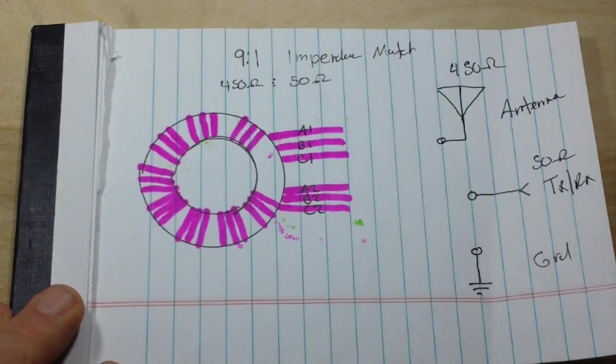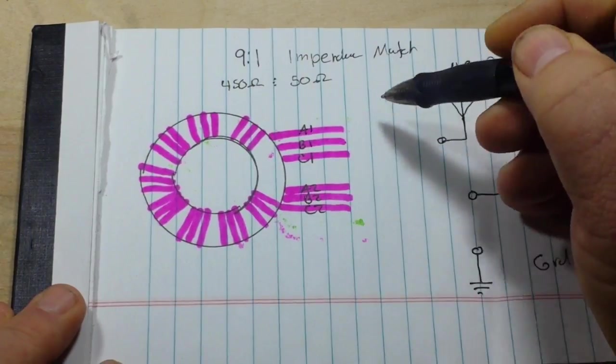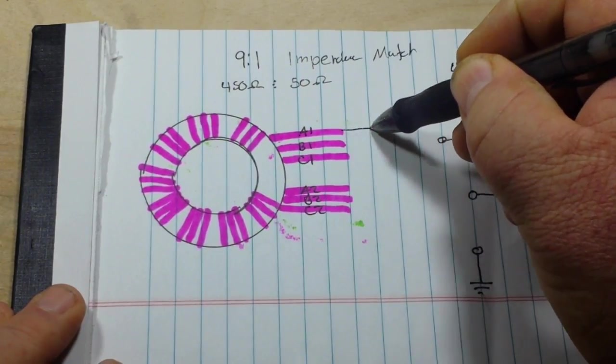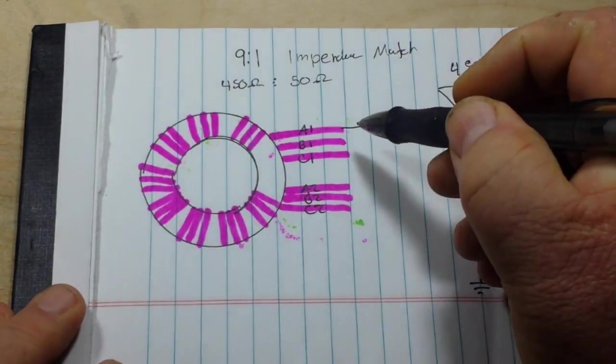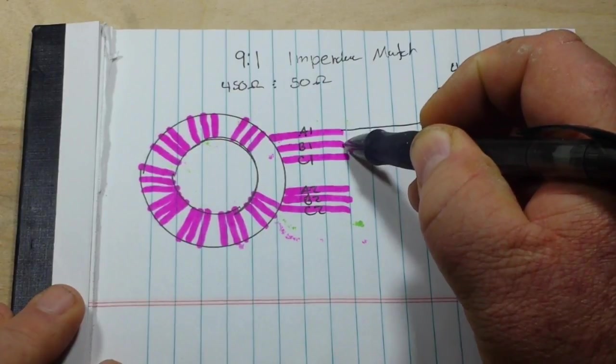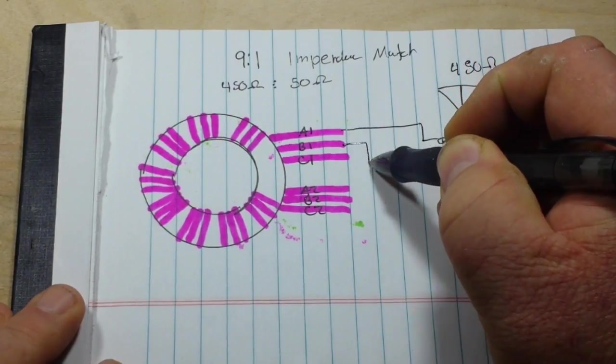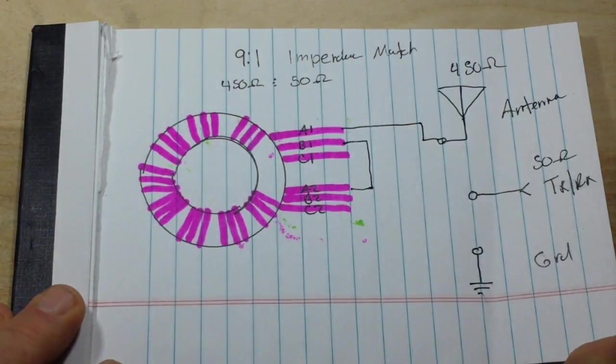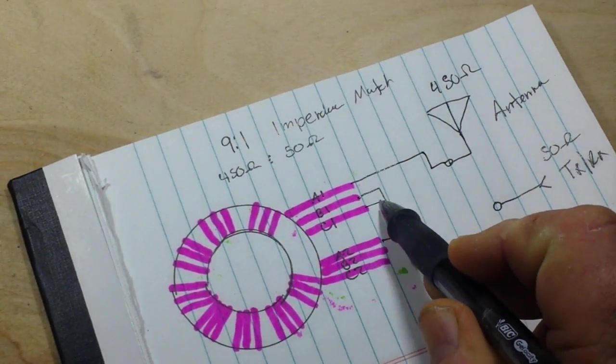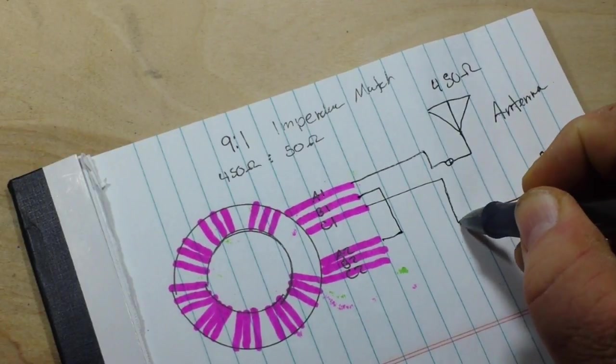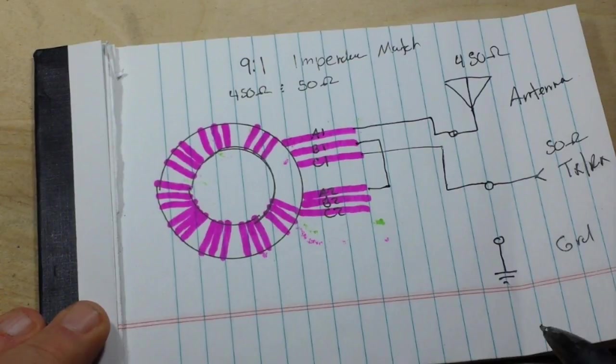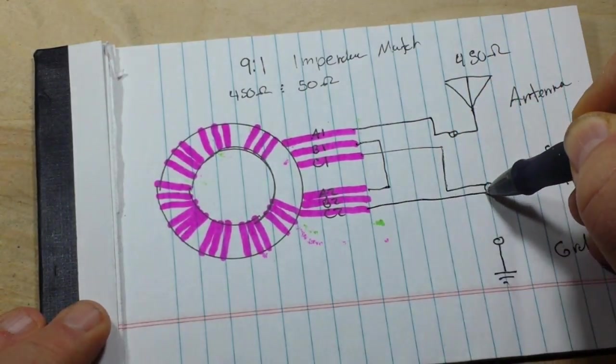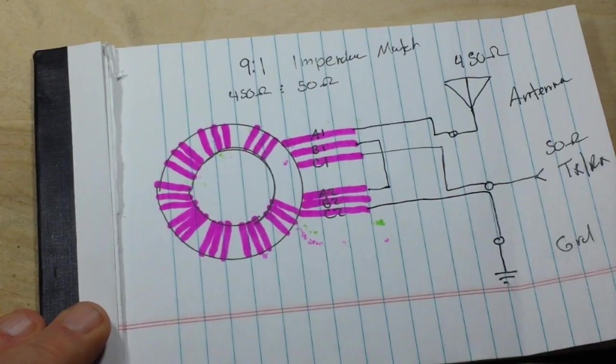Here's how this goes: we take A1 and connect it to our antenna. We take B1 and connect it to A2. We take C1 and connect it to our radio tuner, and we take C2 and connect it to ground. That's it, that's all there is to it.